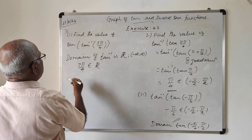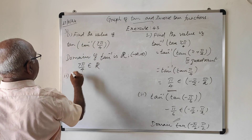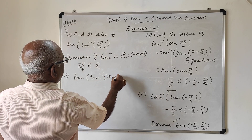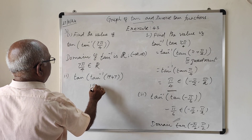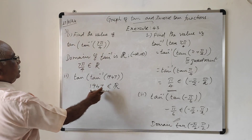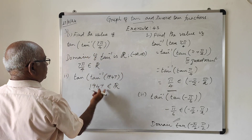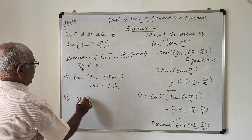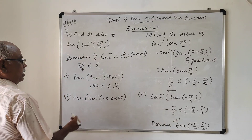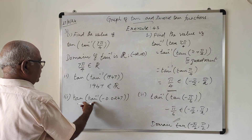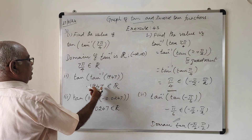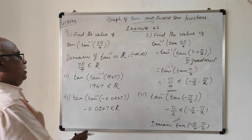Similarly, tan(tan⁻¹(1947)) — here also, tan and tan⁻¹ are reciprocal, so we get 1947, which is in the real domain. Therefore the value is 1947. Another problem: tan(tan⁻¹(-0.0247)) — here also, this equals -0.0247, which is also in the real line. So the value of this function is -0.0247.